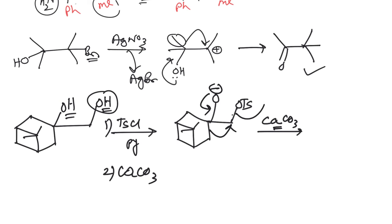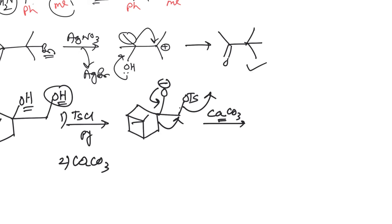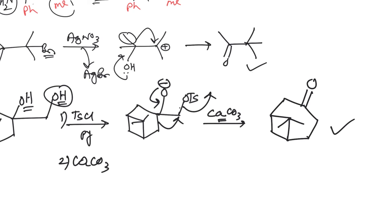When the O minus pushes, this group will migrate over and the tosylate will leave as a leaving group — that is why we formed the tosylate in the first place. The product we get is a ring-expanded compound. Counting the carbons: 1, 2, 3, 4, 5, 6, 7 — yes, correct, this is a seven-membered ring product.